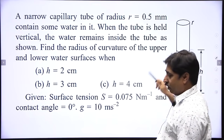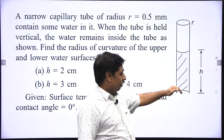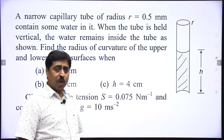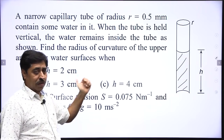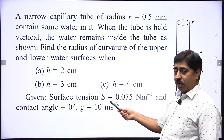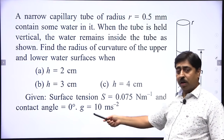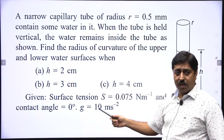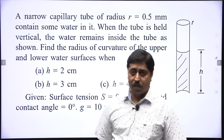This is the upper meniscus — you have to find the radius of curvature of that, as well as the radius of curvature of the lower meniscus, the lower curved surface of the water, when h is 2 cm, 3 cm, and 4 cm. The surface tension of water is 0.075 Newton per meter, the contact angle of water with the capillary glass tube is 0 degrees, and the acceleration due to gravity is 10 m/s².